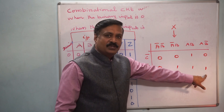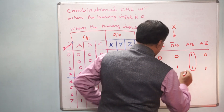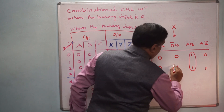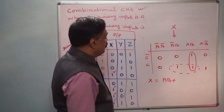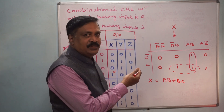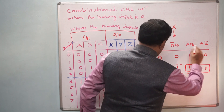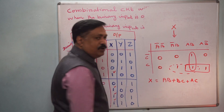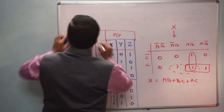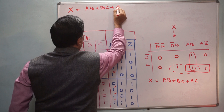Now we have to group these ones and write an equation. The first group gives AB. Then we can also group here — B and C, so that term is BC. And this group gives AC. Therefore the equation for X is: X = AB + BC + AC.